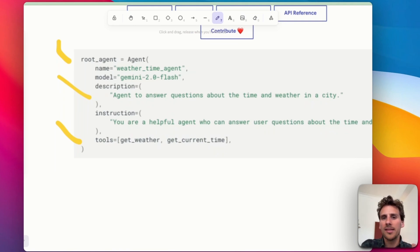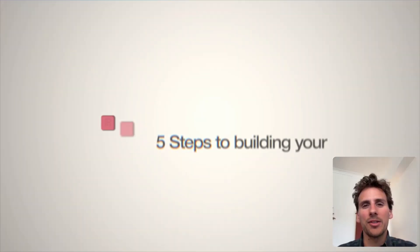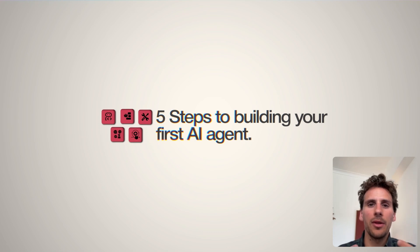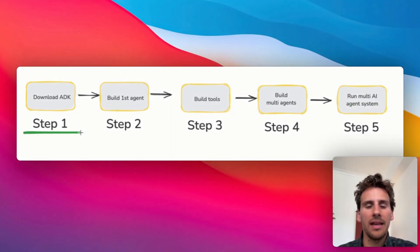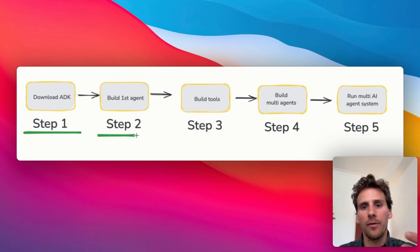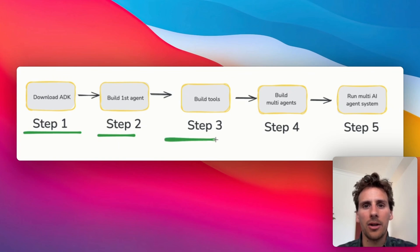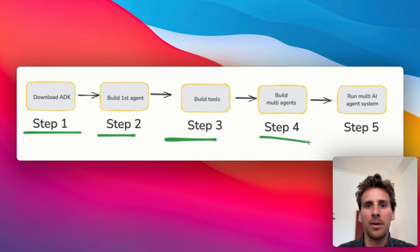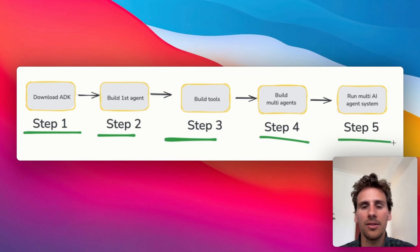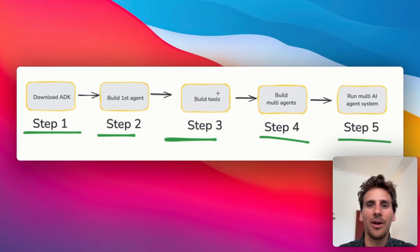Now that we know what Google's ADK is, let's go over the five steps to go from setting up ADK on your computer all the way to running your multi-AI agent system. Step one: download ADK and ensure all the keys are running properly. Step two: build our first agent — a very simple agent just to show how it works. Step three: build tools so our agents have more capabilities. Step four: add more agents to create a multi-AI agent system. Step five: run it and test it out, building a travel concierge using Google Maps and Google Search.